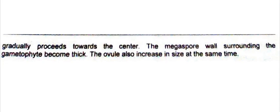As a result of this wall formation from the outer side toward the center, the inner tissue of the megaspore is converted into cellular tissue, and the whole part becomes cellular tissue. The megaspore wall becomes thick surrounding the gametophyte, meaning this germinating megaspore which produces cellular tissue has a thickened wall, and the size of the ovule also increases.